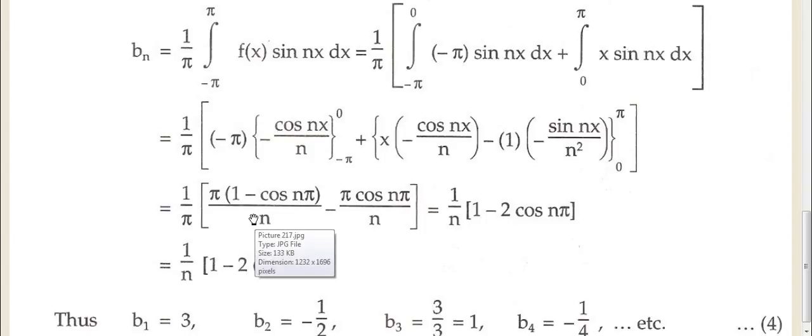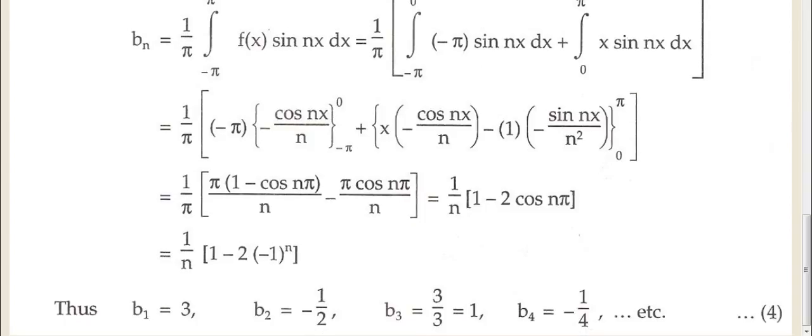Otherwise in some problems it is n minus 1, so it is not applicable for n equals to 1. In this case it is not the case. Again the same logic: cos n pi means minus 1 raised to n. And then again we will follow b1, b2, b3. We will find out those. Here all are existing because nothing is getting cancelled over here.